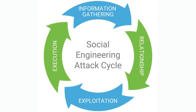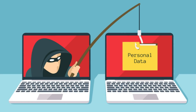On sixth number we have social engineering. This involves manipulating individuals to divulge confidential information or perform actions that may compromise security. It can also include tactics like impersonation, baiting or eliciting information through deceptive means.